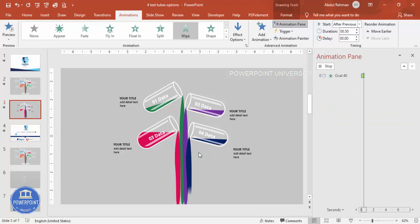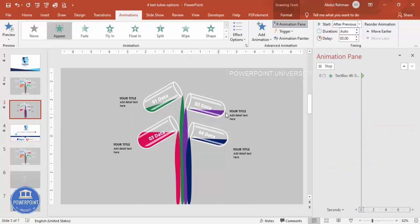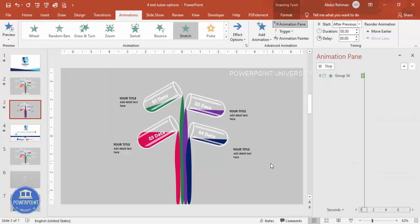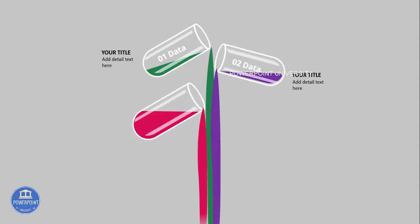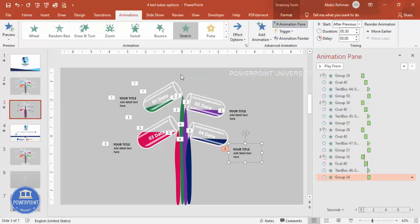Apply the same animations to the third and fourth tubes using the animation pane. When done, click through the slide: the first tube comes in, then the second, third, and fourth. As mentioned, depending on your requirement, you can increase or decrease the number of glass test tubes in the infographic.